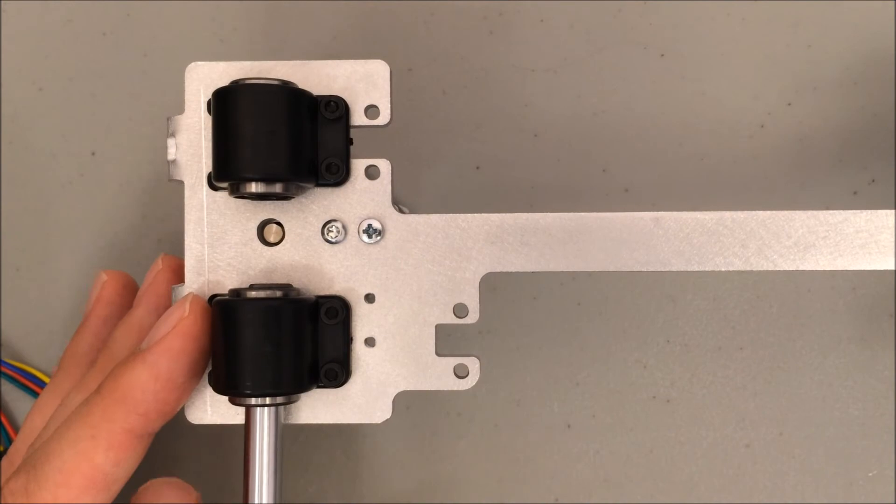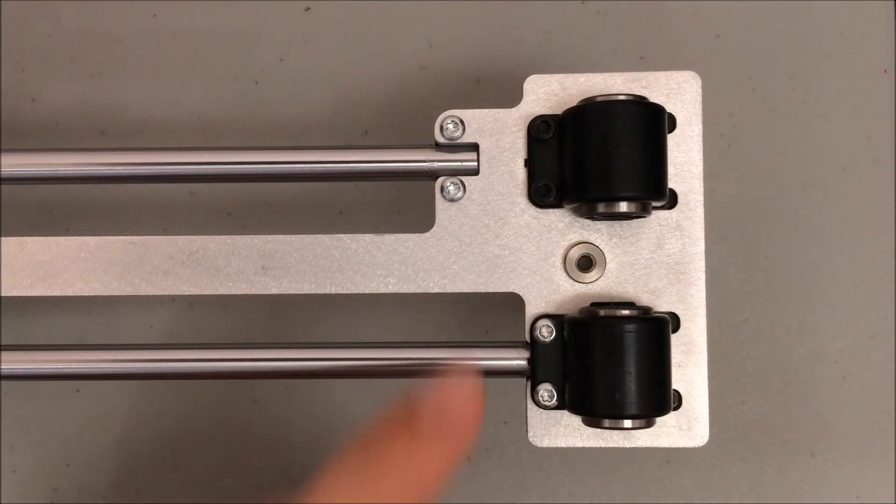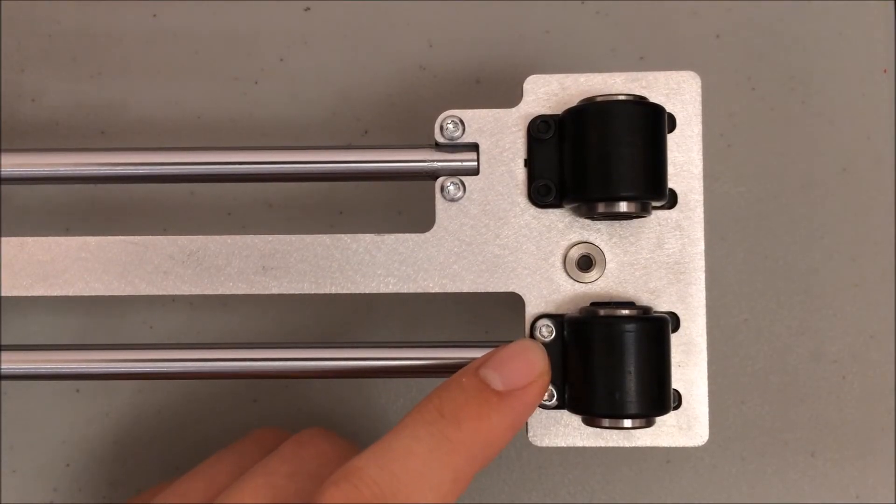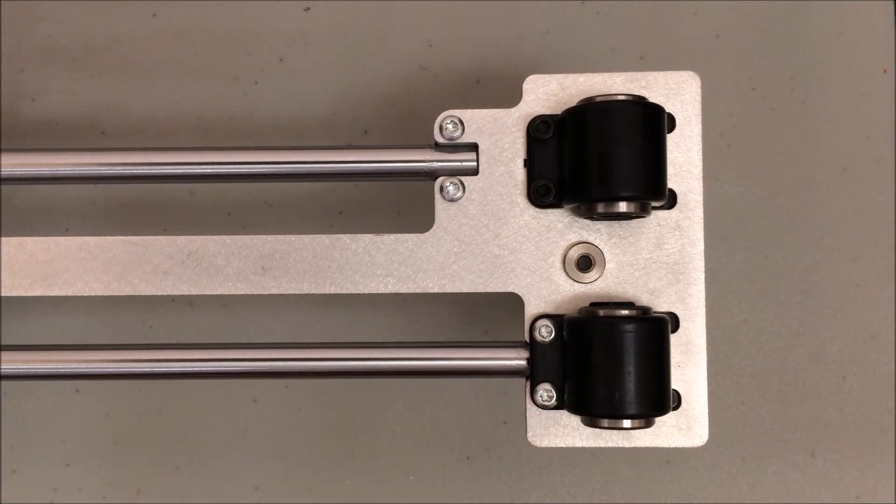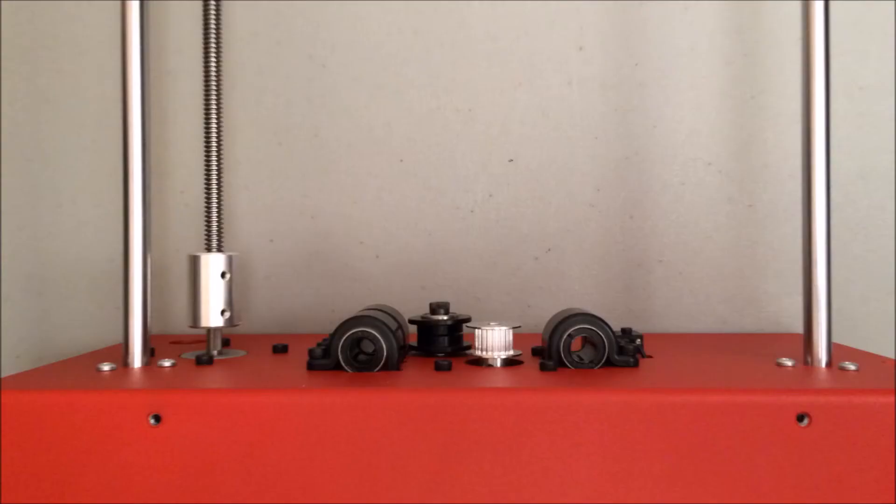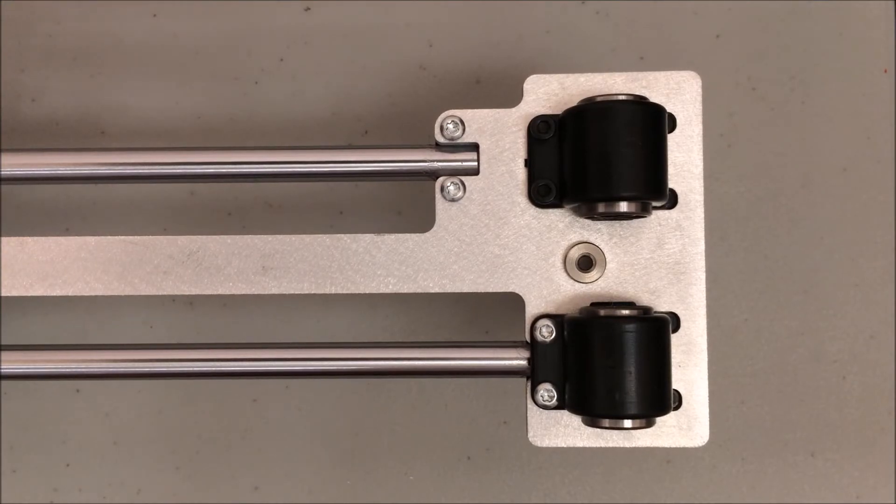I previously checked the alignment of the bearings on the side of the motor. Now that this fourth bearing is installed I can check the alignment on the opposite side. The reason I check this alignment is that this slides on top of the smooth rods that are standing up out of the base. So when you place this piece it'll be vertical and much harder to adjust the bearings later.